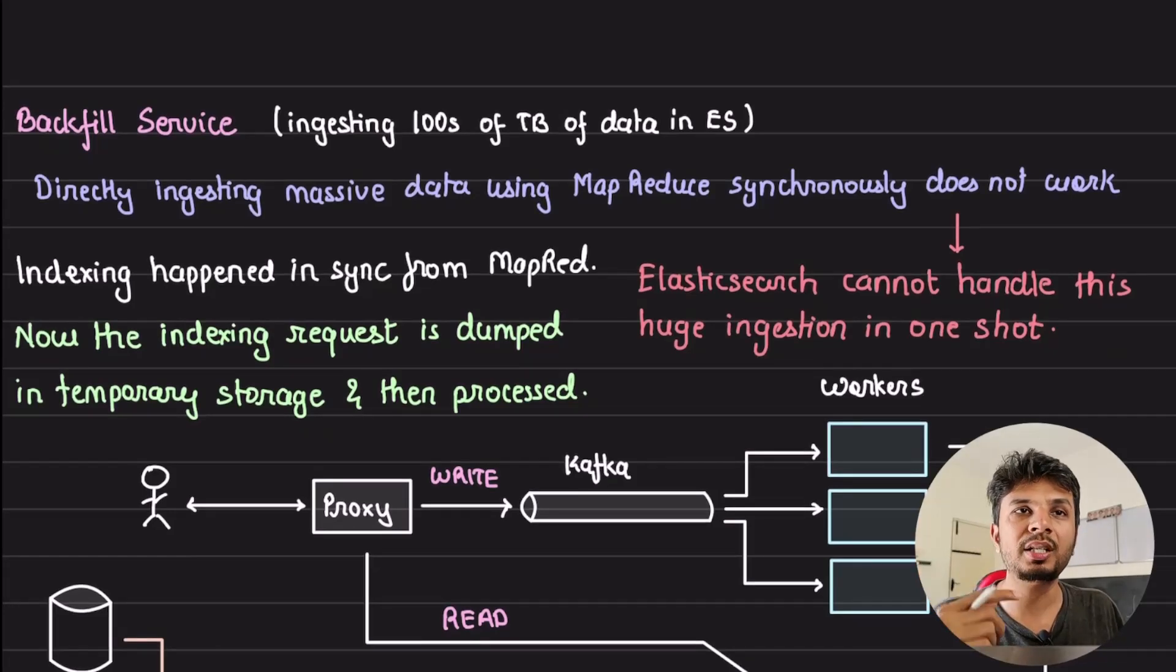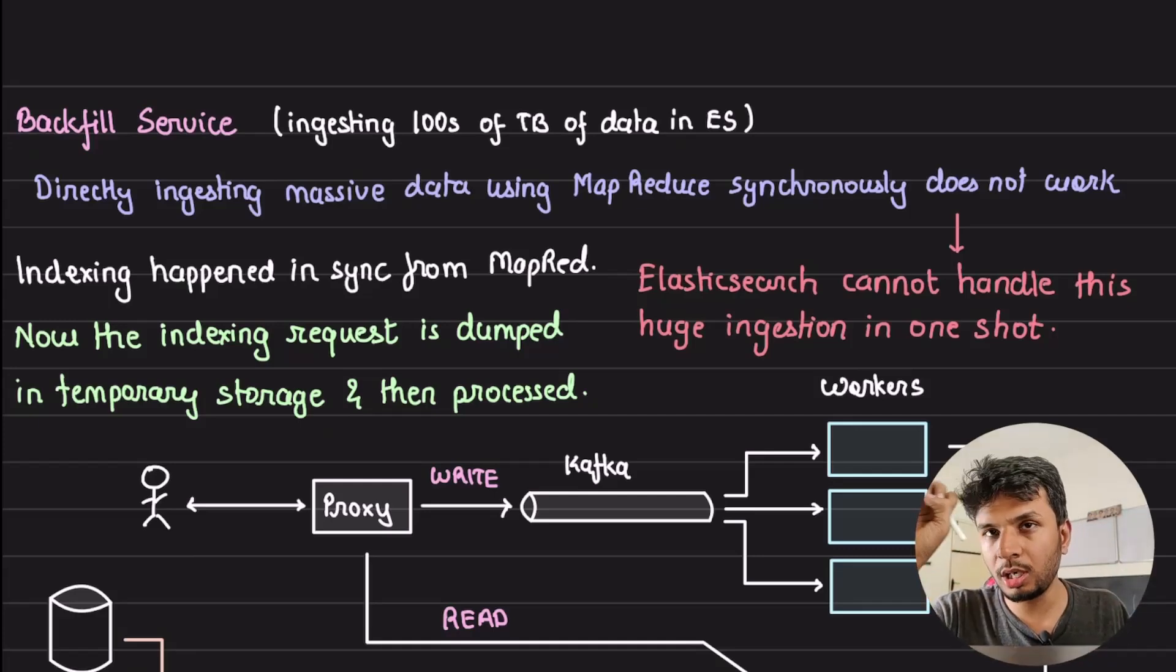The next service, and really interesting one which is where we see the entire architecture together, is a backfill service. Now it's a very common requirement across organizations that you will have to backfill a lot of data into Elasticsearch. This typically happens how? For example, you have a job which is running which takes data from multiple data sources and it wants to index them into Elasticsearch. So typically what you do, you write a simple MapReduce job. This MapReduce job would take data from multiple sources and make calls - each reducer will call Elasticsearch endpoints to get it indexed.